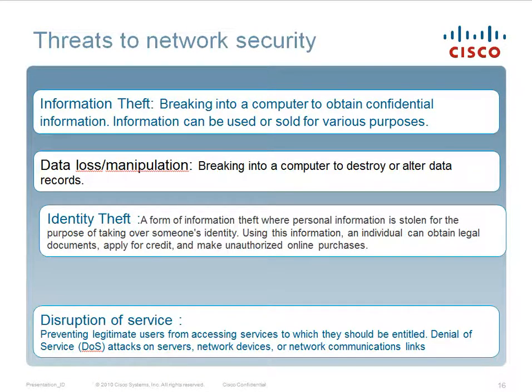The threats to network security include: information theft — breaking into a computer to obtain confidential information that can be used or sold for various purposes; data loss or manipulation — breaking into a computer to destroy or alter data records; identity theft — a form of information theft where personal information is stolen to take over someone's identity, allowing an individual to obtain legal documents, apply for credit, and make unauthorized online purchases; and disruption of services — preventing legitimate users from accessing services, including Denial of Service (DoS) attacks on servers, network devices, or network communication links.